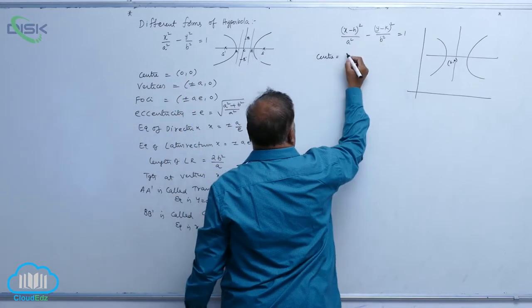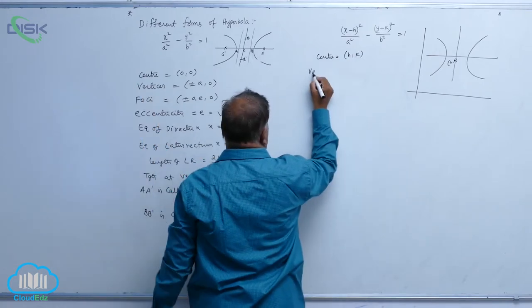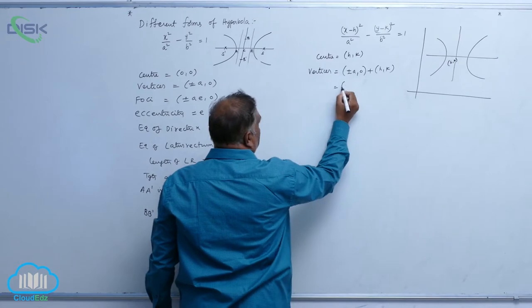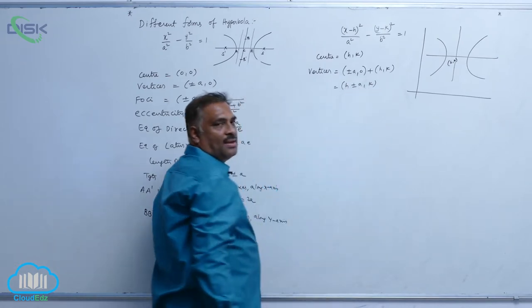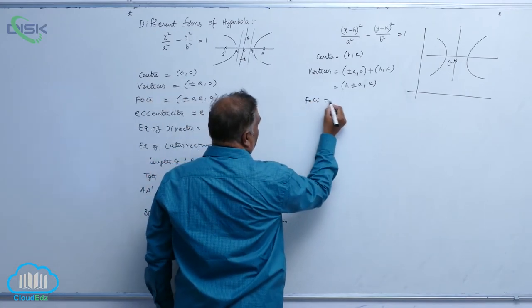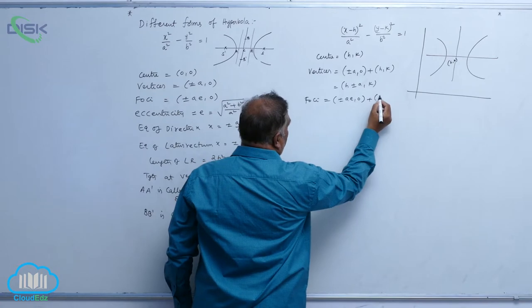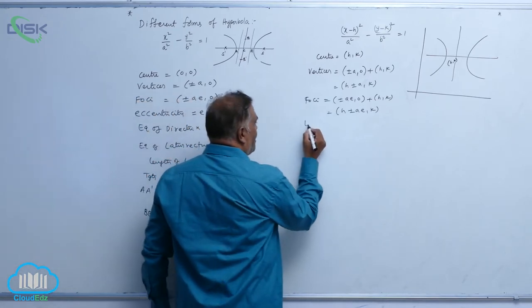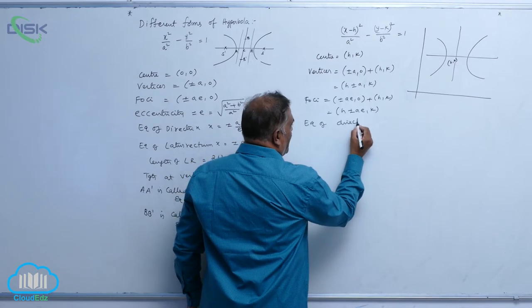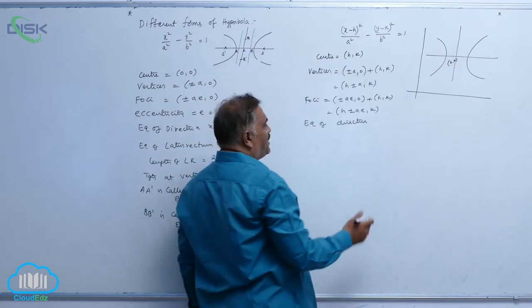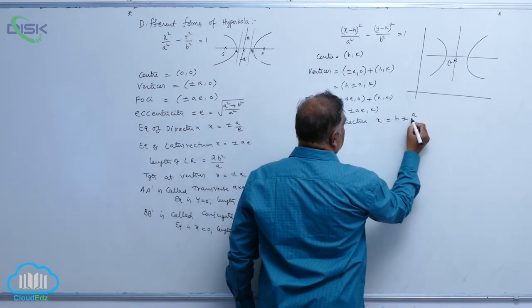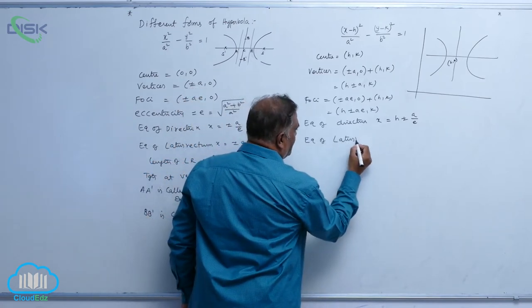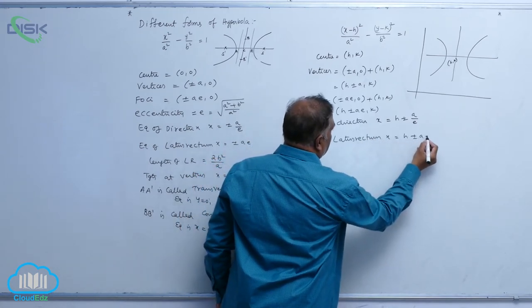For the shifted hyperbola, the center is (h, k). Vertices, which were previously (±a, 0), become (h ± a, k). Foci, which were previously (±ae, 0), become (h ± ae, k). The equation of the directrix, a vertical line that moves horizontally, becomes x = h ± a/e. The equation of the latus rectum is given by x = h ± ae.